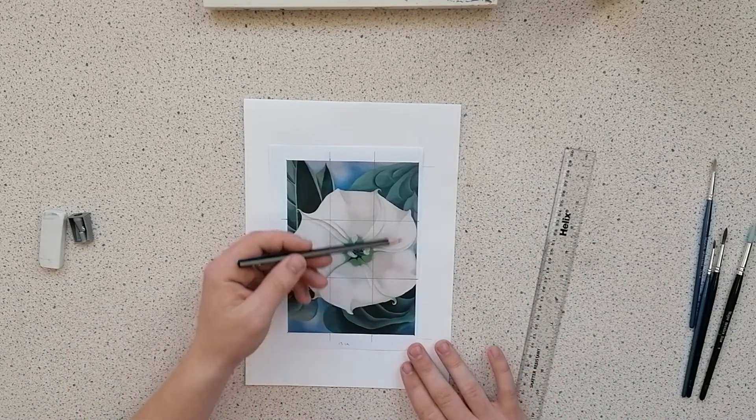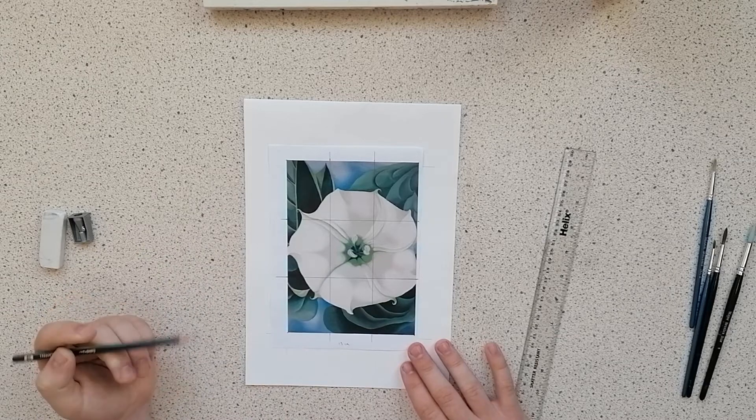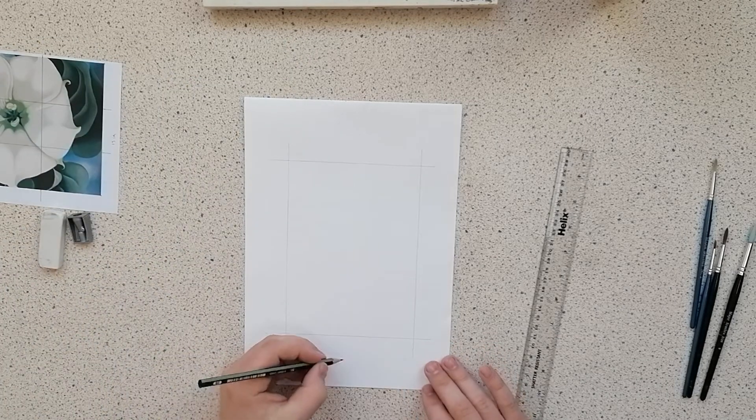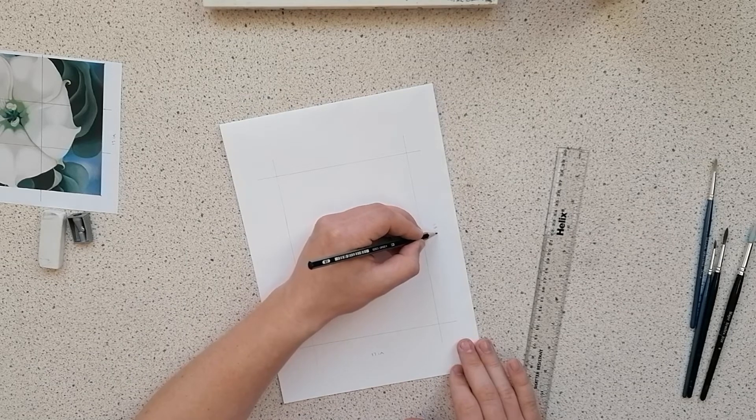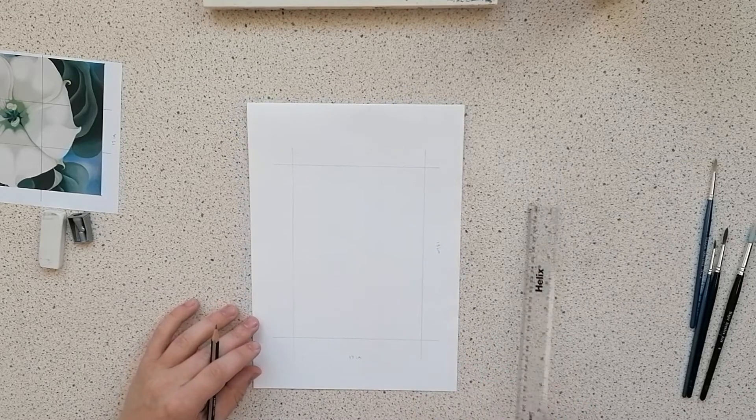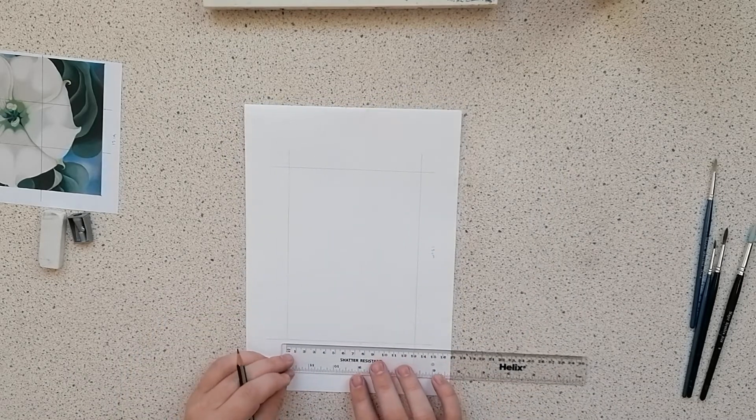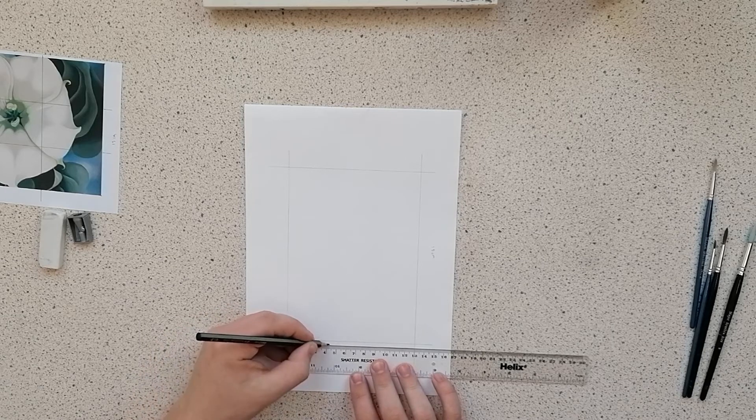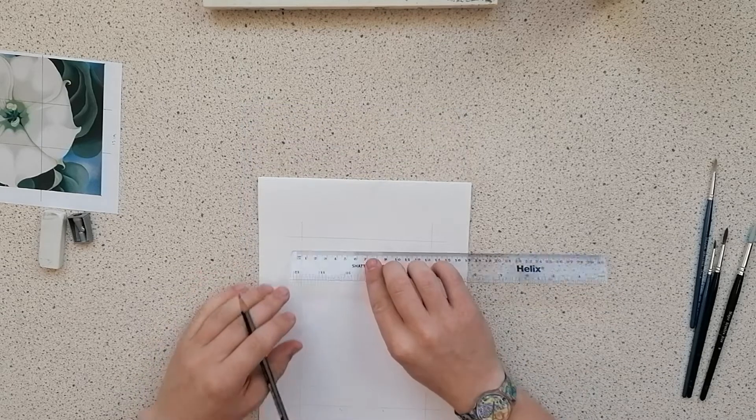Okay, once you're happy with that and you've got a nice square 3 by 3 grid on your photograph, put that to one side and do the exact same thing on your paper. However, you will be painting on this, so bear in mind the harder you press down, the more likely you are to see the lines coming through your painting, so at this stage try and be as light as possible.